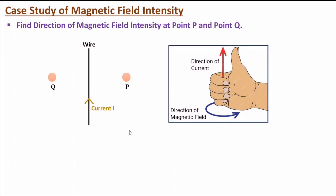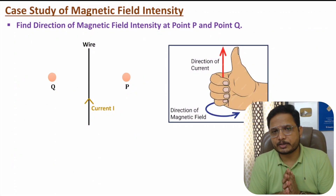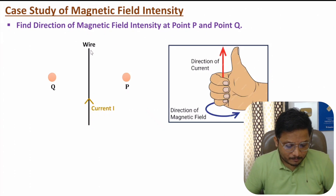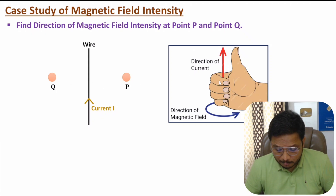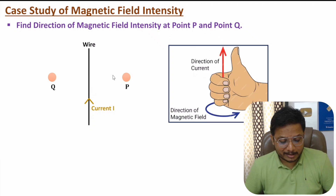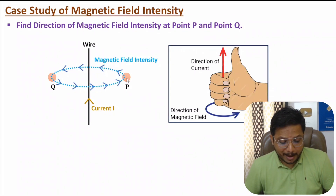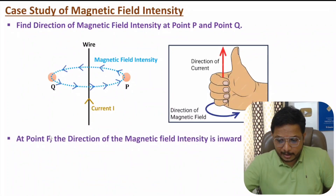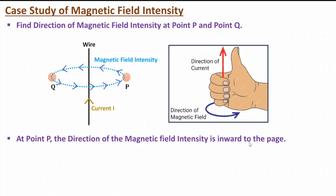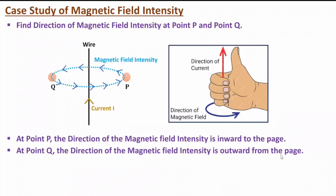Now I'll explain one very interesting case study based on direction identification. Here we have a current passing through a wire and we need to identify the direction of magnetic field intensity at point P and at point Q. You need to apply the right-hand thumb rule — the thumb is in the direction of current, so magnetic field intensity revolves around the wire. At point P, magnetic field intensity is going inside the page, and at point Q, magnetic field intensity is coming out of the page.